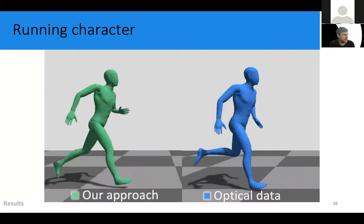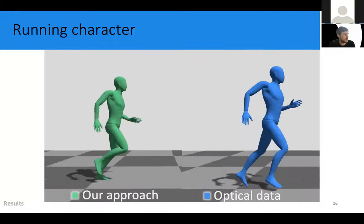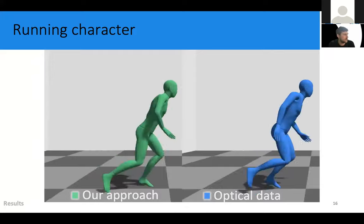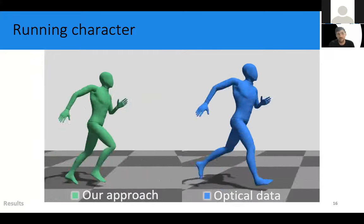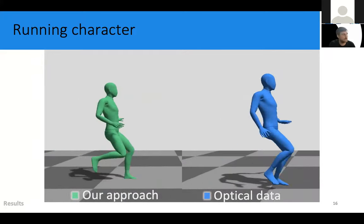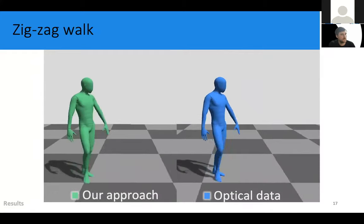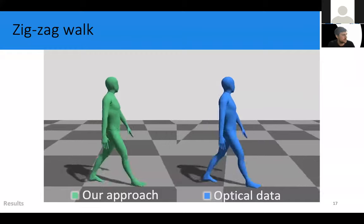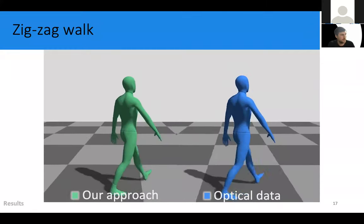Only in the end of it, you see that it slides a little bit forward still after the motion. But this is something that can be quite easily fixed with some post-processing foot skate fixing algorithms, for example. Here we show zigzag motion, which proves that our method is also capable of taking turns.